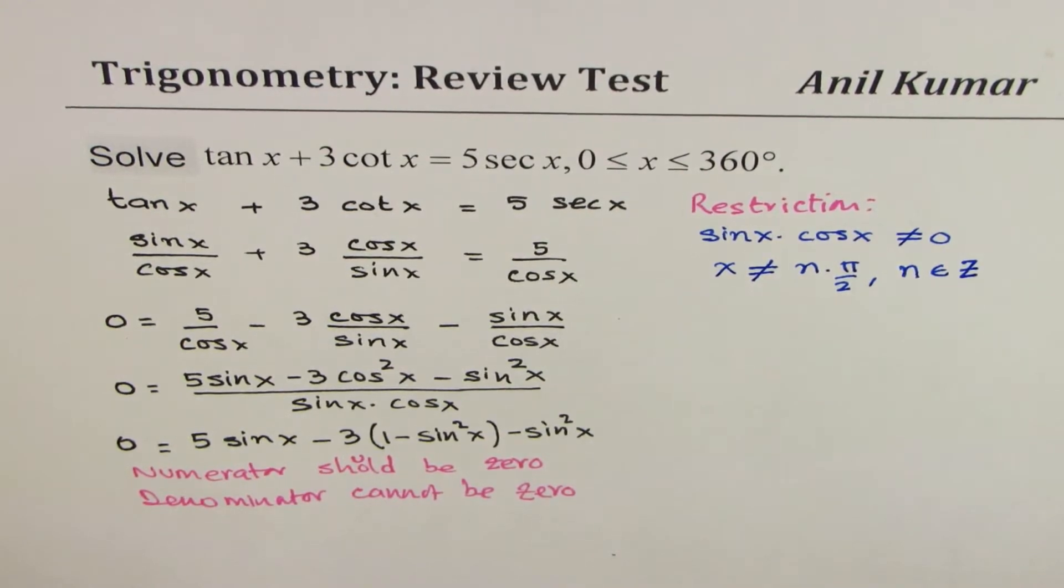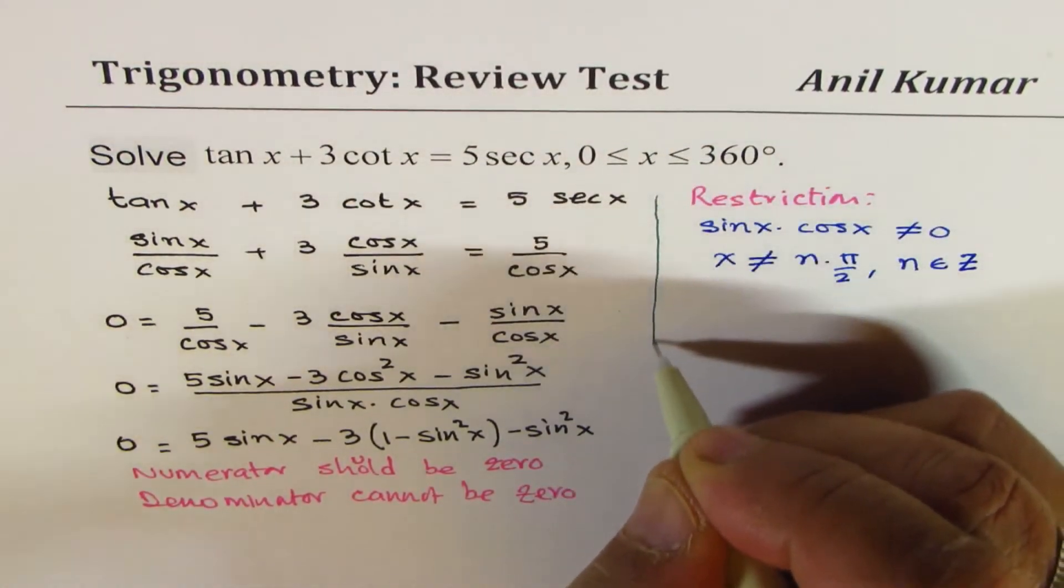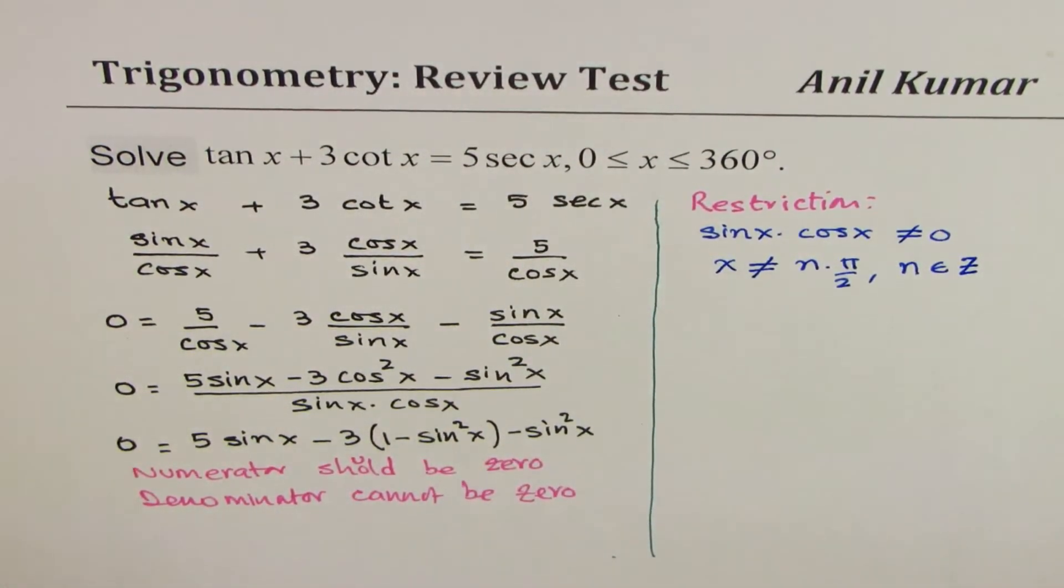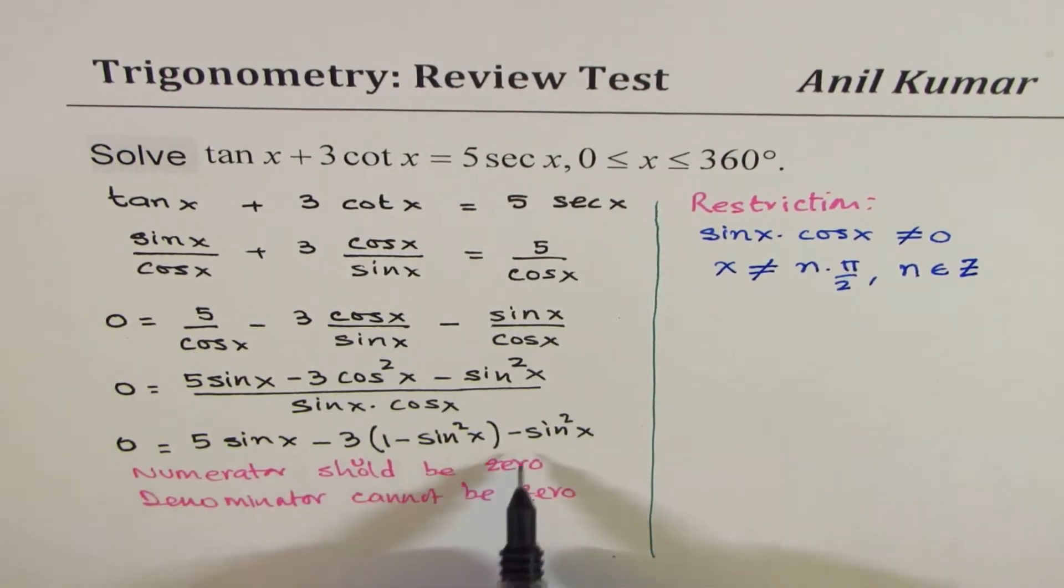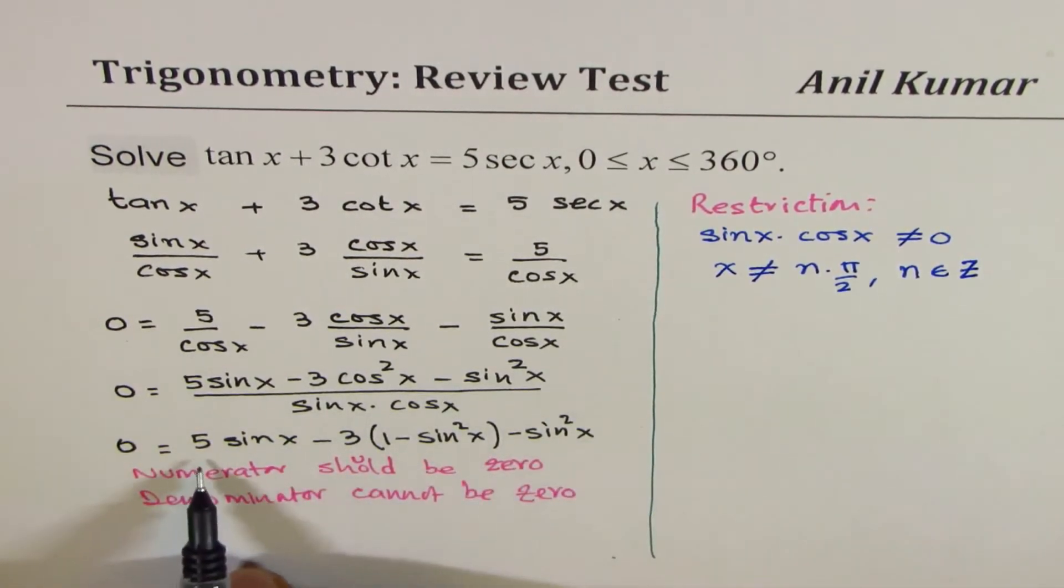Now this stage is, what we're trying to say here is that the numerator should be 0, and denominator cannot be 0, because dividing by 0 is not valid. So as far as denominator cannot be 0, we have already written the restriction for that. And now, let us solve for numerator to be 0.